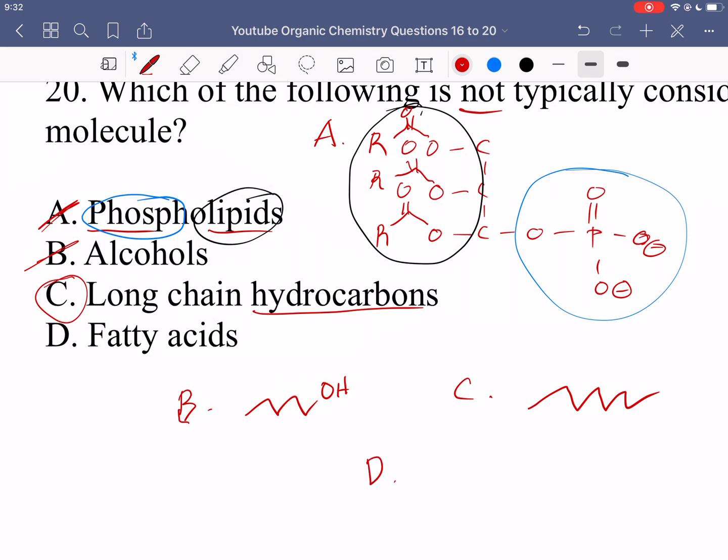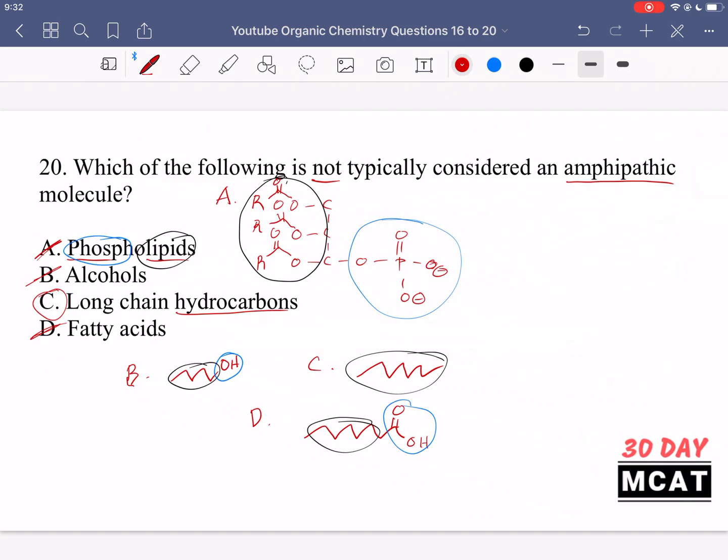And finally, D, a fatty acid. It looks like if I had a long chain, but then also a carboxylic acid at the end. So therefore, there is a polar part to this molecule as well. So here, these are the polar parts and then these are the non-polar parts. But then in option C, we only have a non-polar part. We have no polar part. Therefore, it's not amphipathic.